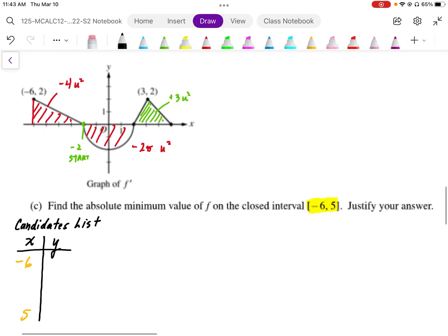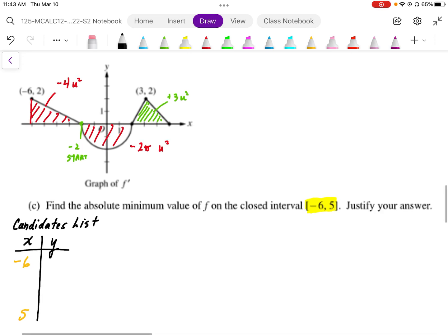So Part C asks, find the absolute minimum on F on the closed interval negative 6 to 5 and justify the answer.